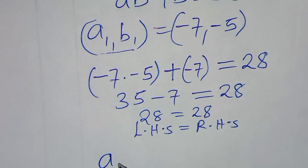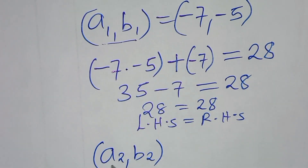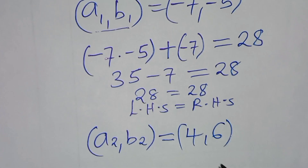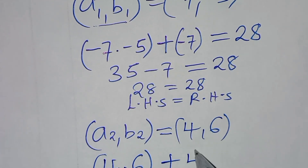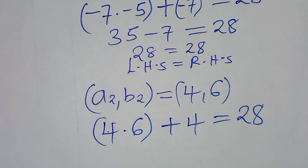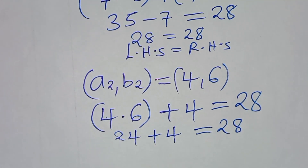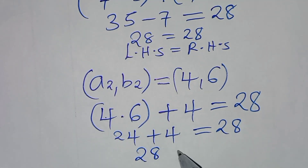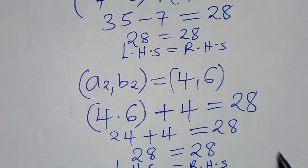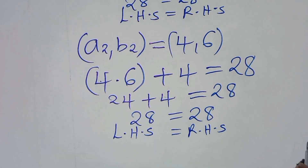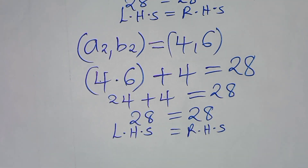Now checking the second solution (a2, b2) = (4, 6) in equation 1: 4 times 6 plus 4 = 24 plus 4 = 28, which equals 28. So the left side equals the right side, verifying that equation 1 is satisfied by both solution sets.